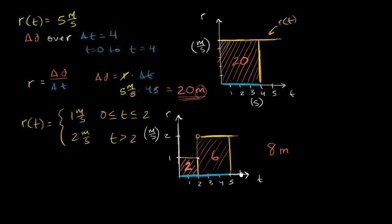Hopefully this gives you the intuition that the area under the rate curve, or rate function, gives you the total net change in whatever that rate was finding the rate of. In this case it's distance per unit time — if you take the area under the velocity function over some period of time, that area is going to be our total net change in distance.